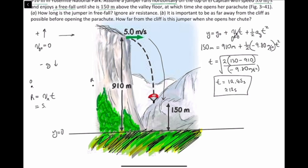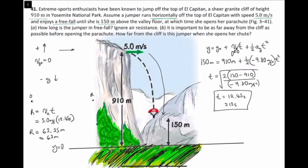5.0 meters per second times 12.45 seconds, and the range equals 62.25 meters. With sig figs, that's 62 meters. The horizontal motion is at a constant speed since air resistance is being ignored. That is it.